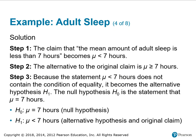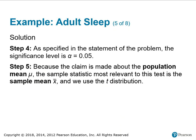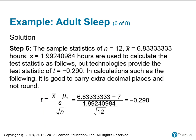The alternative to the original claim is mu is greater than or equal to 7. Because the statement mu is less than 7 hours does not contain the condition of equality, it becomes the alternative hypothesis H₁. The null hypothesis H₀ is the statement that mu equals 7 hours. As specified in the problem, the significance level is 0.05. Because the claim is about the population mean mu, the sample statistic most relevant is the sample mean x-bar and we use the t-distribution. The given sample statistics are used to calculate t, which is found to be negative 0.290.